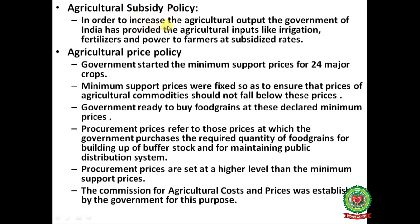Agricultural subsidy policy: to increase agricultural output, the Government of India provided agricultural inputs like irrigation, fertilizers, and power to farmers at subsidized rates. Agriculture price policy: the government started the Minimum Support Price for 24 major crops. Minimum support prices were fixed so that prices of agricultural commodities should not fall below these levels, and the government is ready to buy food grains at these declared minimum prices.